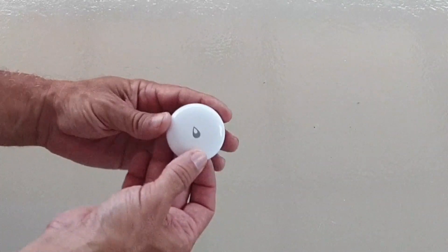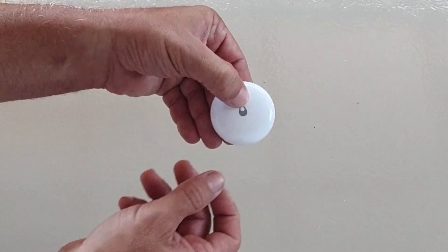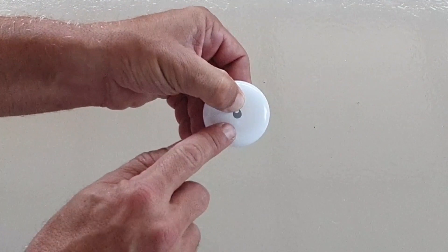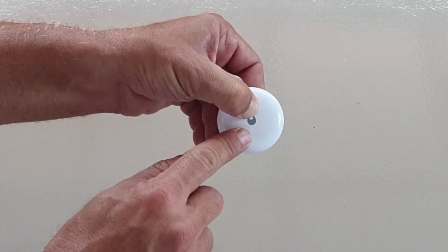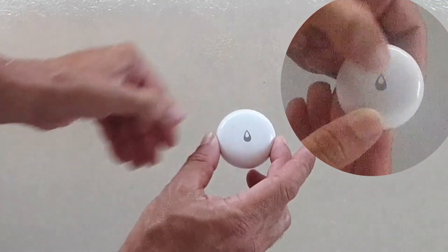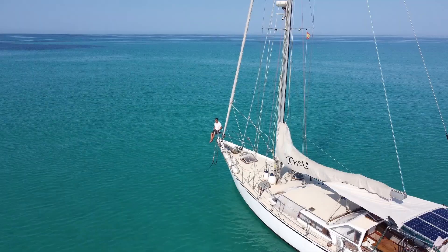To set it into pairing mode, you need to press the button for at least 5 to 10 seconds. A little blue light will flash rapidly when it enters pairing mode. When it flashes rapidly, you take your finger off, then you can pair it with the Home Assistant.